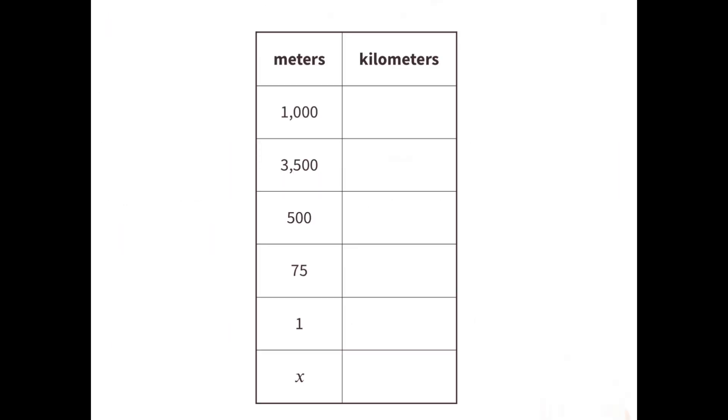Well, we know that 1,000 meters equals 1 kilometer, so a meter is 1,000 times smaller than a kilometer. If 1,000 meters equals 1 kilometer, then 3,500 meters would equal 3 and 5 tenths kilometers.